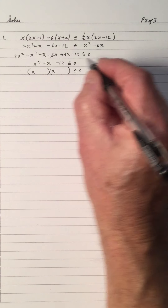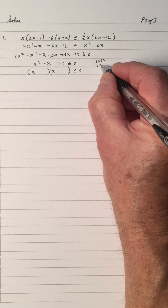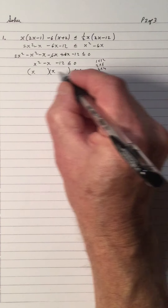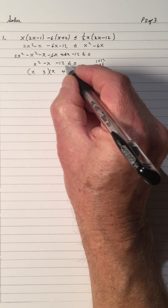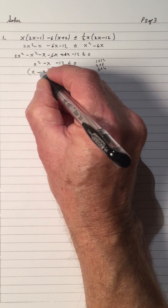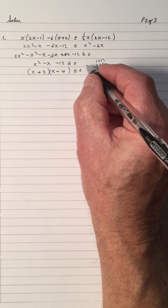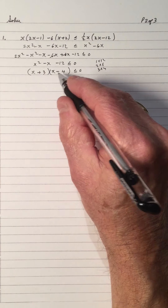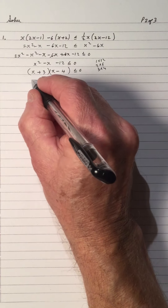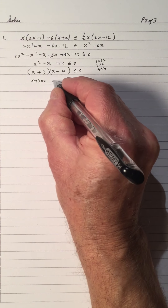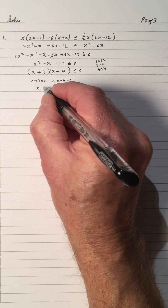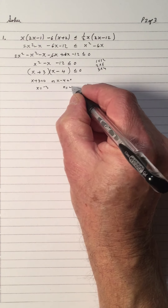The factors of 12 are 1 times 12, 2 times 6, and 3 times 4. Which factors give me a difference of 1? That's 3 and 4. And since it's a negative 12, one must be positive and one negative — so positive 3 and negative 4. That gives us x plus 3 equals 0, or x minus 4 equals 0. So x is negative 3, or x is 4.